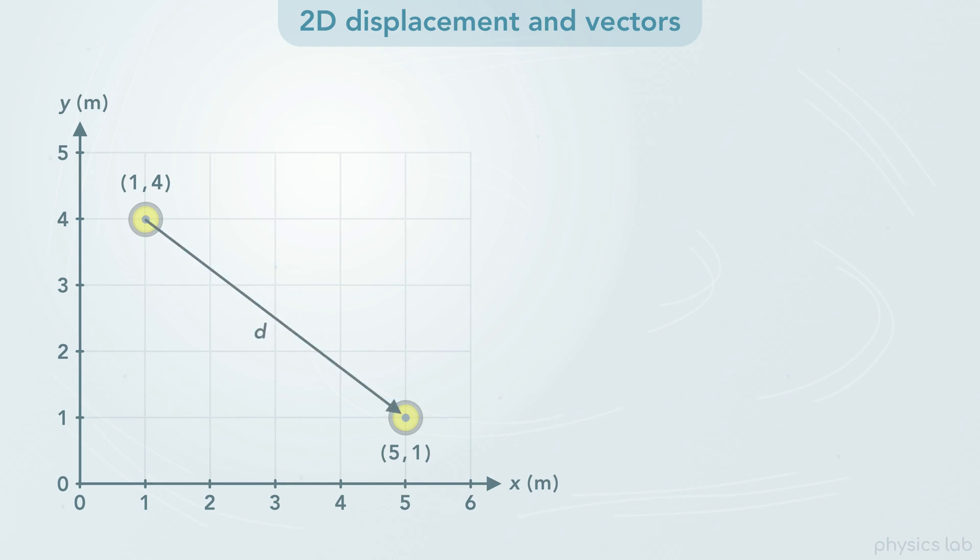This would be the displacement vector. But what would the x and y components be? Delta x is 5 meters minus 1 meter, which is 4 meters.